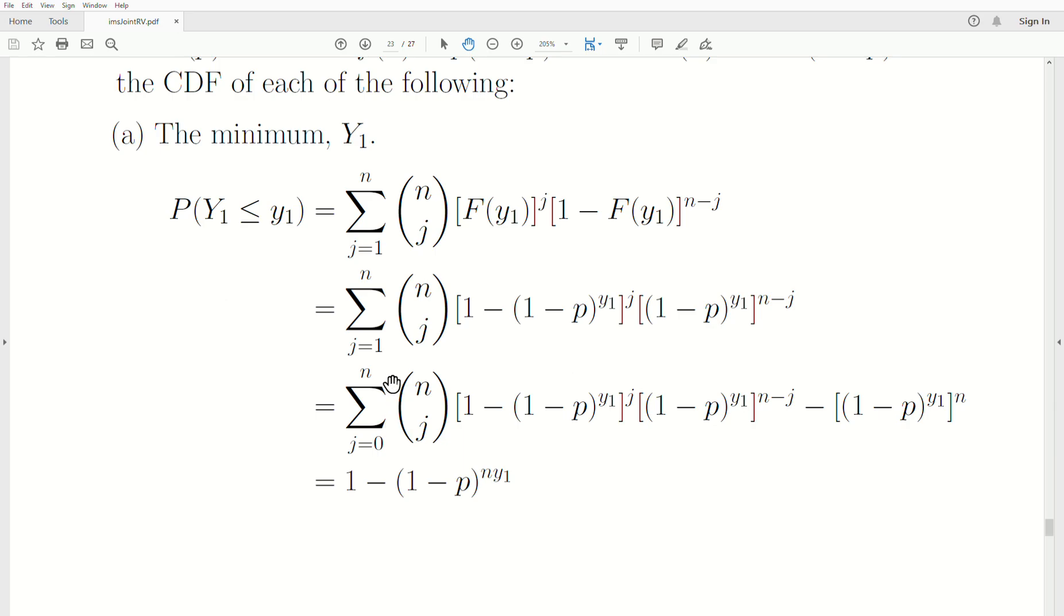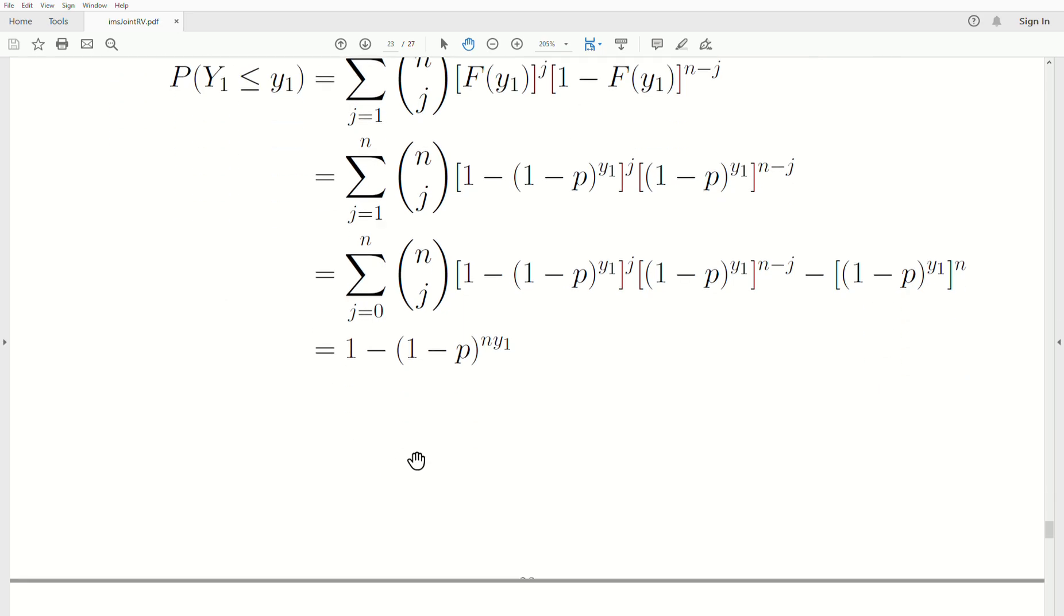Notice if we went from 0 to n, that's a density. So let's add in that 0, but then we have to subtract it out. So this is 1, and then this is the result. So that's the CDF of the first order statistic.